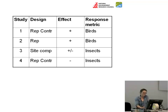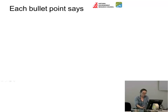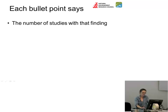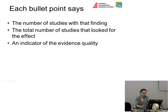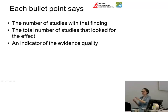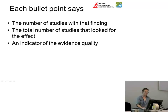Each bullet point in your set of key messages should contain several pieces of information. It should state the number of studies with that finding, and it should also give the total number of studies that looked for that effect. It should provide an indicator of evidence quality. What you want to see is not just how many studies found the effect, but how many total studies there were — otherwise you can't judge how good the evidence is. Ten studies finding a benefit look great if there have only been ten studies; if there have been a hundred, not so good.